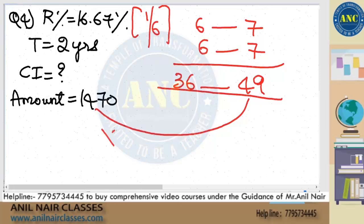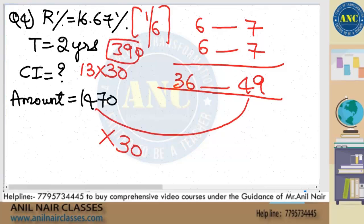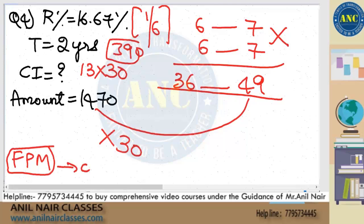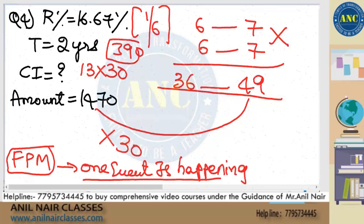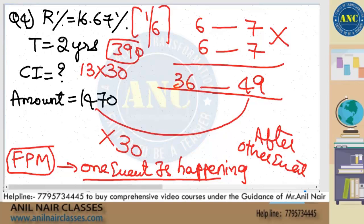49 corresponds to 1470, which is 30 times. So CI will become 13 × 30 = 390. We apply this because first year 1/6 and second year 1/6 happen one after the other — fundamental principle of multiplication. One event is happening after the other, so we multiply.